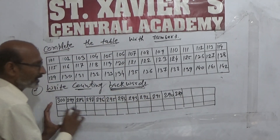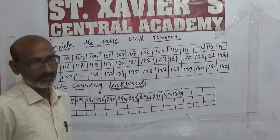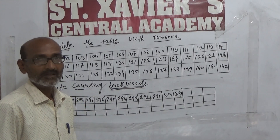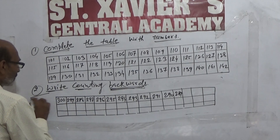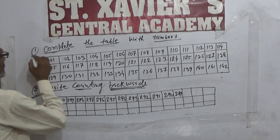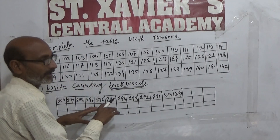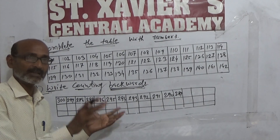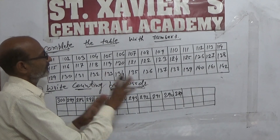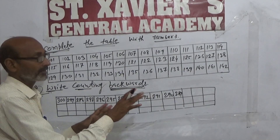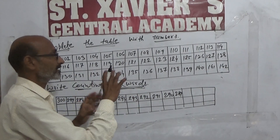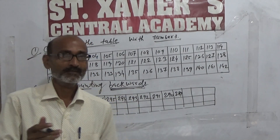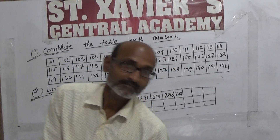Backward counting करते हुए table को complete कर लेना है। Theek hai, clear। आपके book में यह जो question है, आप उसको solve करेंगे — ऐसे table जो दिखता है उसमें 4 questions हैं, 4 questions को आप table के माध्यम से complete करेंगे। Thank you।